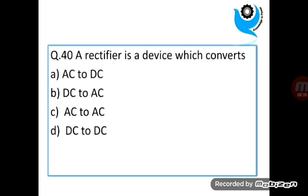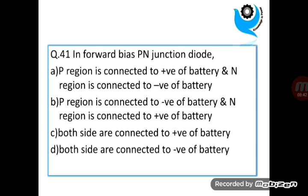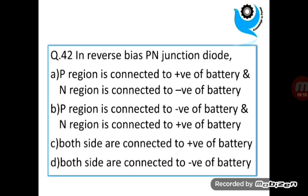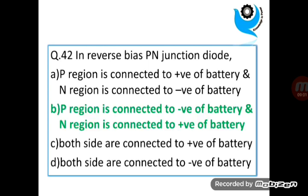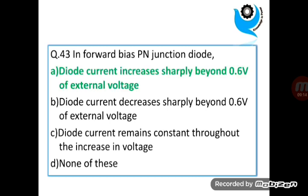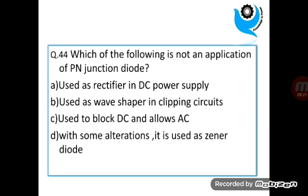Question 40. A rectifier is a device which converts AC to DC. Question 41. In forward bias PN junction diode, P-region is connected to positive of battery and N-region is connected to negative of battery. Question 42. In reverse bias PN junction diode, P-region is connected to negative of battery and N-region is connected to positive of battery. Question 43. In forward bias PN junction diode, current increases sharply beyond 0.6 volt of external voltage.